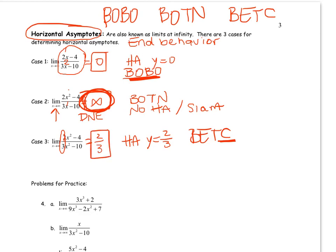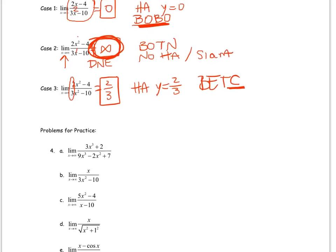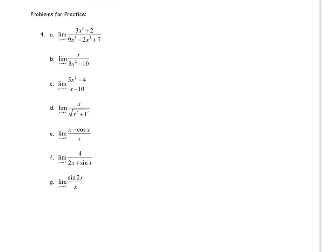So just in reviewing horizontal asymptotes, we've learned how to take limits as x approaches infinity. So it's not a totally new concept. It's just a new way of writing it. All right. Now we have some problems to practice. All right. Now, if you're watching this video because you were absent, I would just go ahead and pause it, try to do as many as I can, and then play the video.